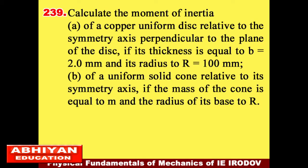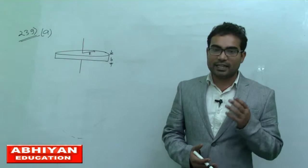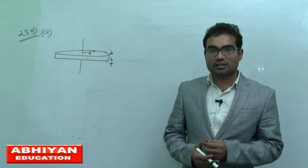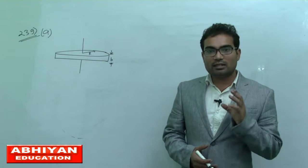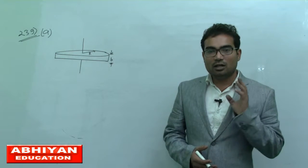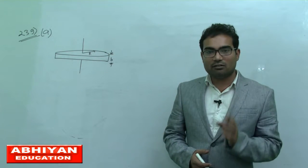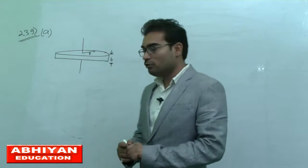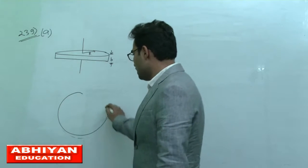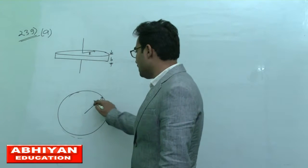Calculate the moment of inertia of a solid cone relative to its symmetry axis if the mass of the cone is equal to M and its radius is equal to R. This problem is about a copper disc, which has radius capital R. We need to find the moment of inertia perpendicular to the plane at the center of the disk.